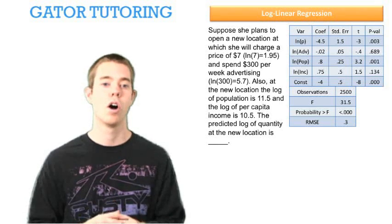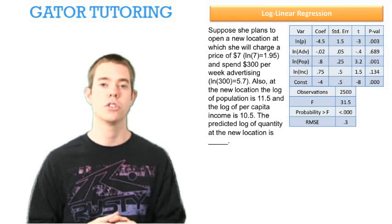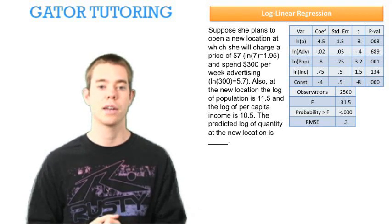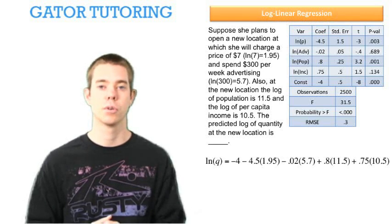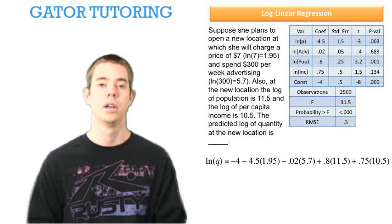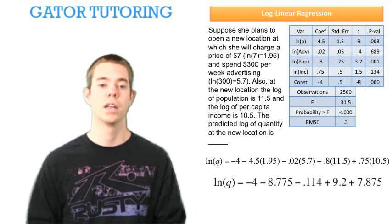The predicted log of quantity at the new location is blank. So they're just asking us what is the predicted log of quantity and they've given us all of our relevant numbers. We can just plug in each component and add them up, and we find that the ln of quantity is equal to 4.186.